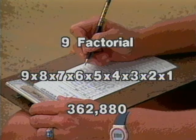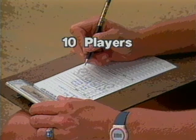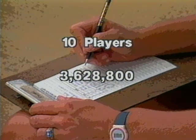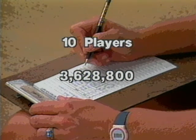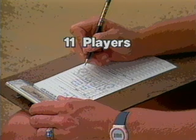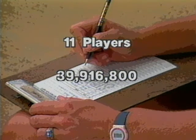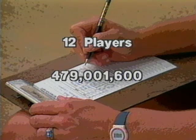Think that's tough? Try slow pitch with ten players — it's ten times that. So instead of 362,880, you've got 3,628,800 possible batting orders. If you use an extra player and bat 11 while playing 10 on defense, you've got 39,916,800. And if you're coaching co-ed softball and use 12 players, you've got 479,001,600.